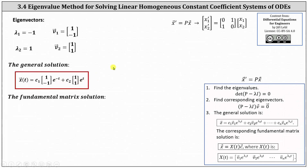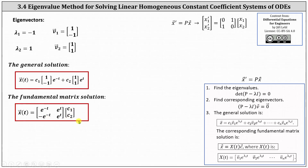Here's the corresponding fundamental matrix solution. We have x of t equals the two by two matrix with entries e to the negative t and e to the t in the first row, and negative e to the negative t and e to the t in the second row, times the vector [c one, c two]. I hope you found this helpful.